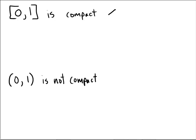So [0,1], the closed set being compact. Well, remember [0,1], the closed set, goes from 0 to 1 and includes those endpoints.